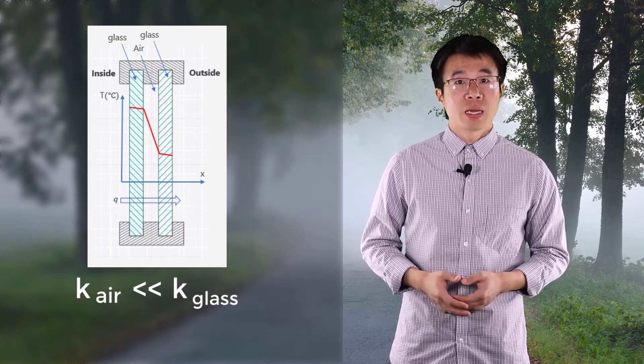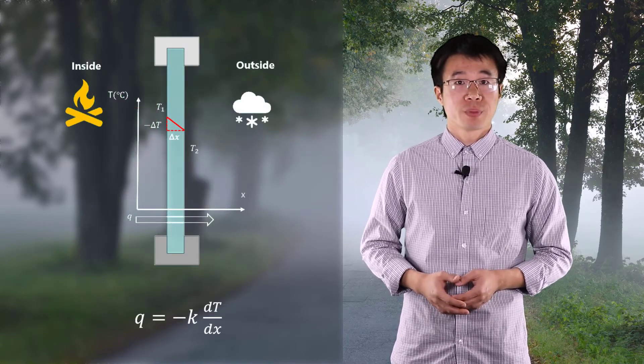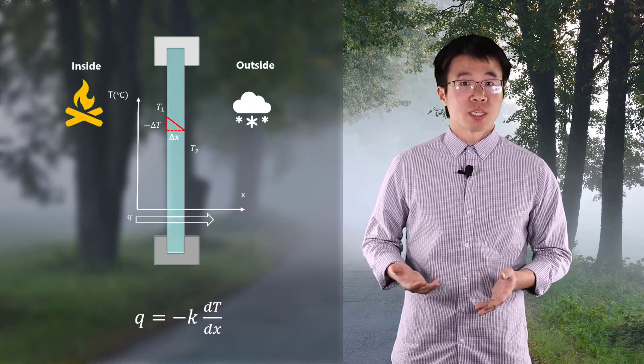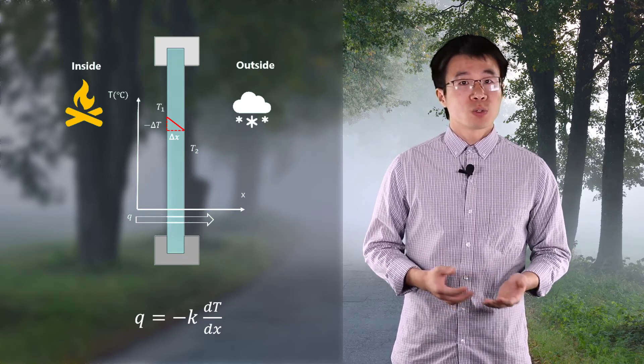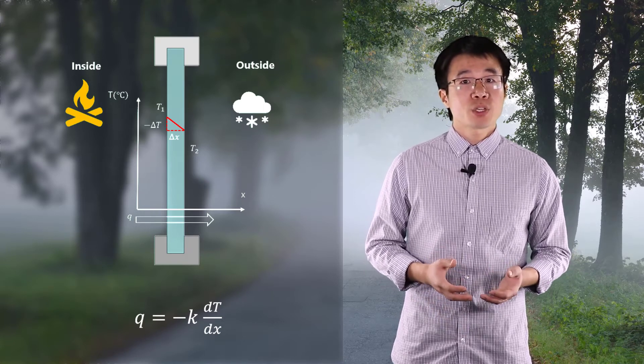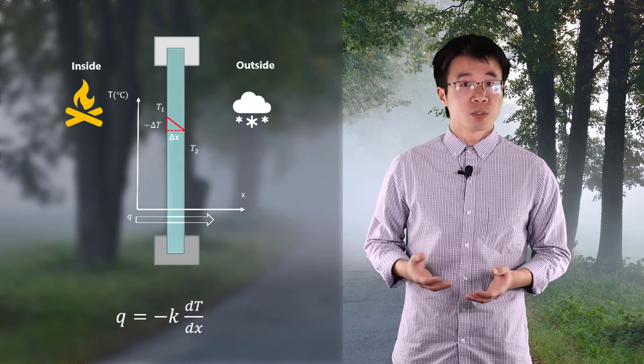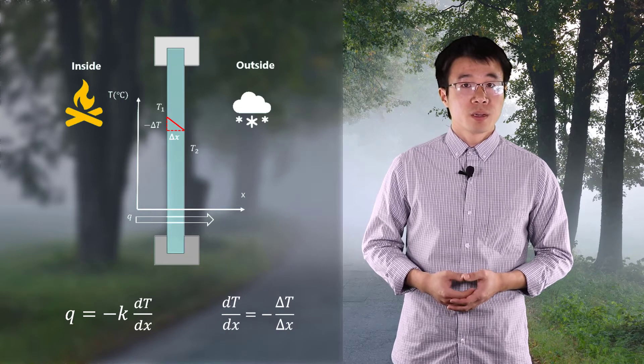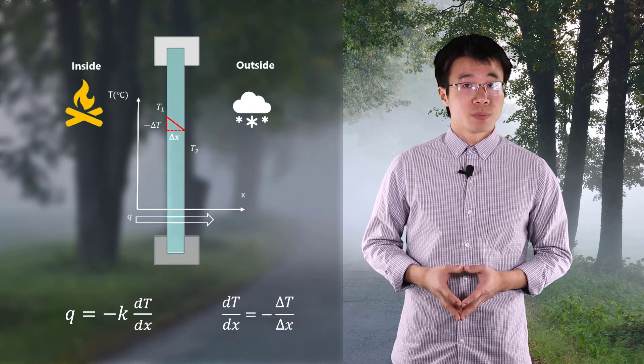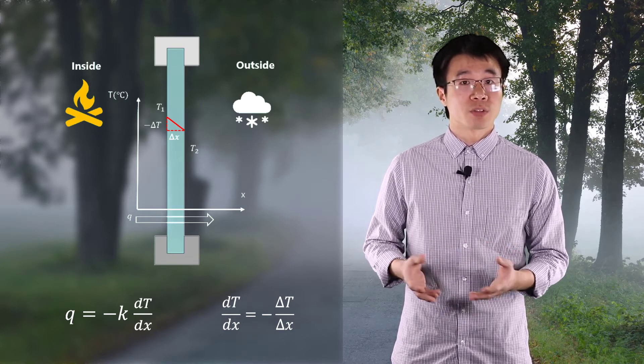Now let's simplify the problem and look at this one-layer glass window to understand why there's a negative sign in Fourier's law. Assuming it's a cold winter day, and the temperature inside is higher than outside, the heat always flows to the lower temperature side according to the second law of thermodynamics. Then the temperature gradient in the heat flux direction is minus delta T divided by window thickness delta X. However, the thermal conductivity of a material is always a positive value. Thus, we need to put a negative sign into Fourier's law to balance the two sides of the equation.